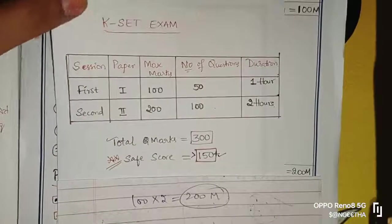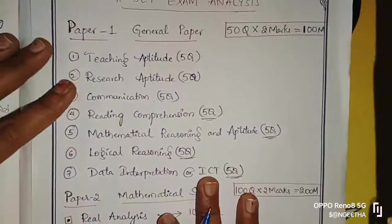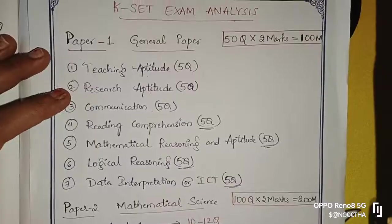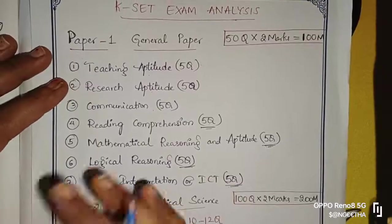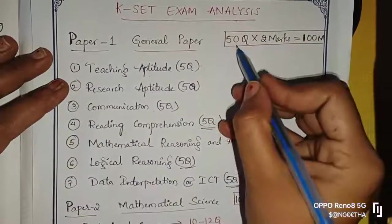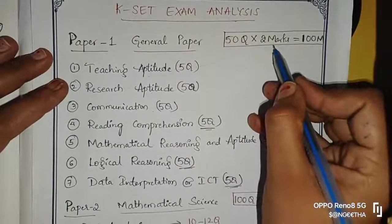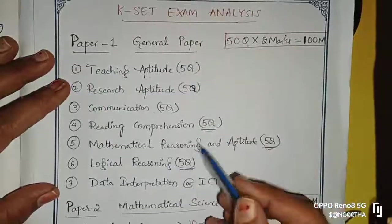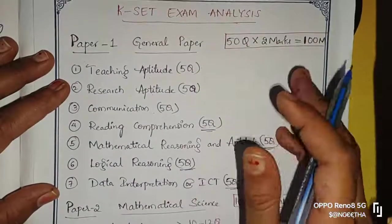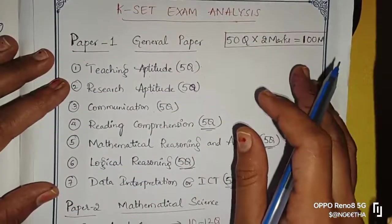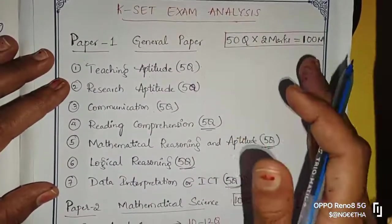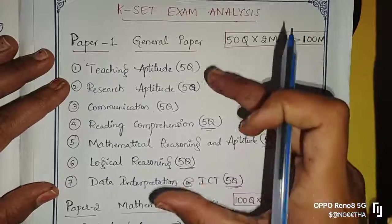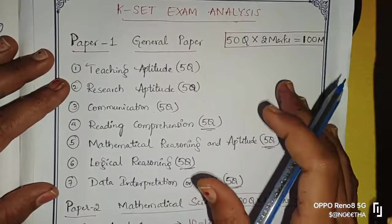So KSET exam analysis - coming to Paper 1, that is the general paper. General paper has 50 questions, 2 marks each, 100 marks. This is a common paper for a lot of streams or subjects, and the general paper will be common for all.